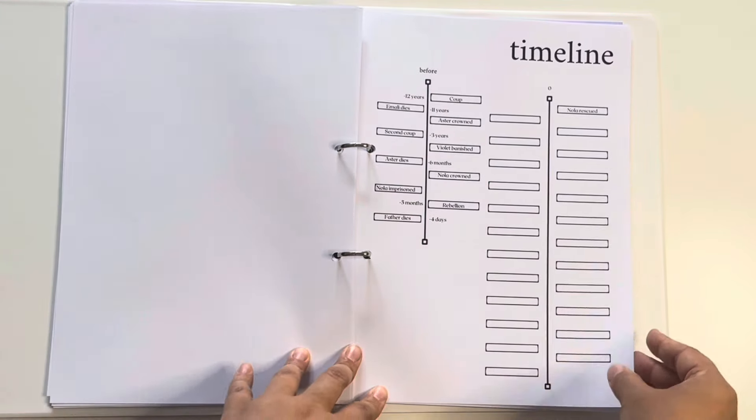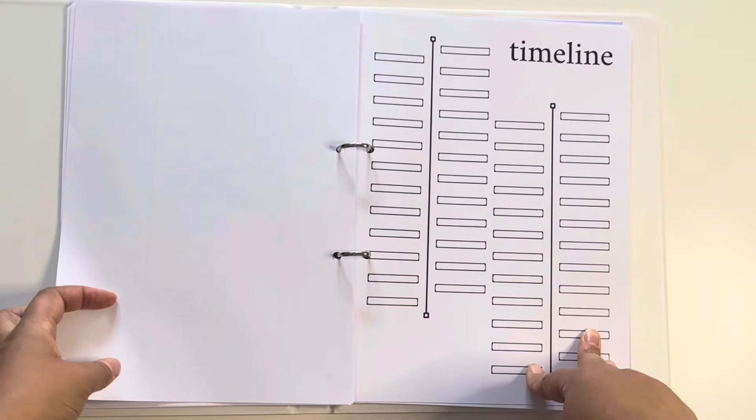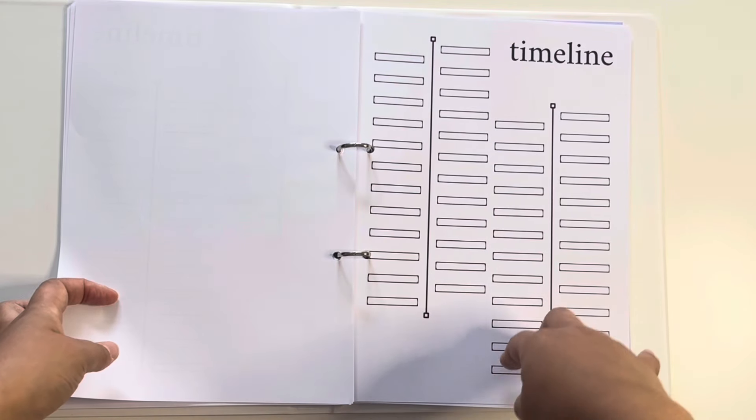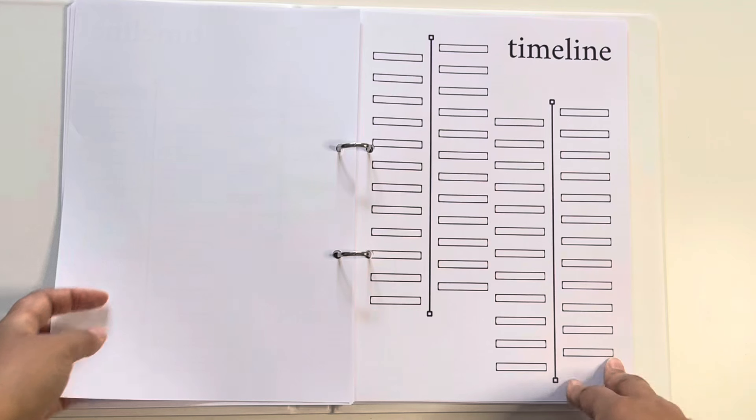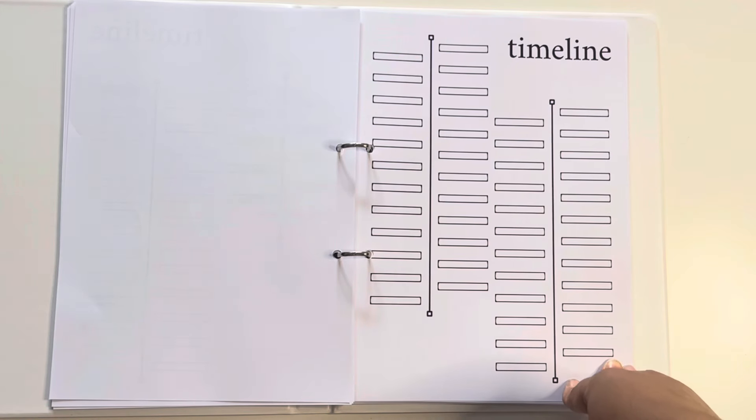And then we come to the timeline, which we'll go to this blank one first. I suck at keeping track of the timeline. I don't know what day it is. I don't know what time it is. I don't know anything. I can never keep track. And the amount of times I've had to scroll through my novel and go, right, that's Monday.